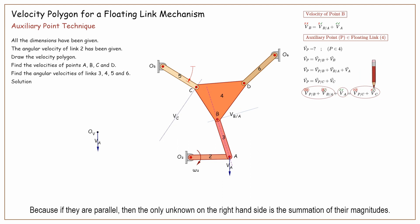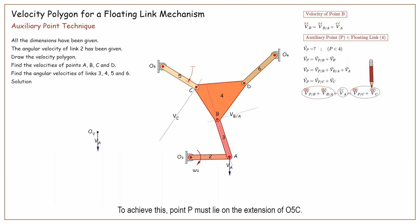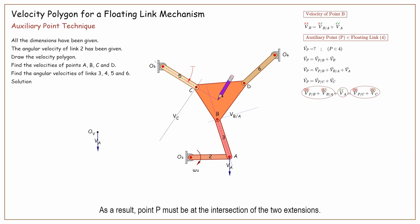Similarly, to reduce the number of unknowns, we should combine these two velocities into one. We want the direction of the velocity of P with respect to C to be parallel to that of the velocity of C. Because if they are parallel, then the only unknown on the right-hand side is the summation of their magnitudes. To achieve this, point P must lie on the extension of O5C. As a result, point P must be at the intersection of the two extensions.